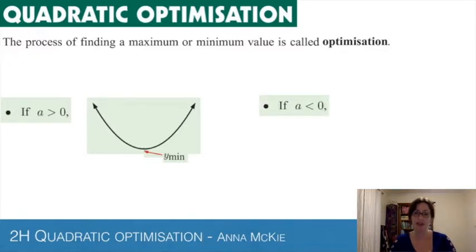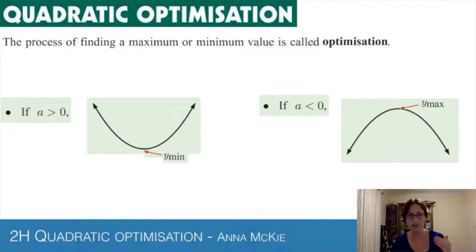If a is less than zero, what shape will that have? It will have a concave down shape. Therefore at the peak, that will be called a maximum - the y maximum value at that point. That's the turning point, you have an axis of symmetry - these are all terms I'm hoping you're familiar with.